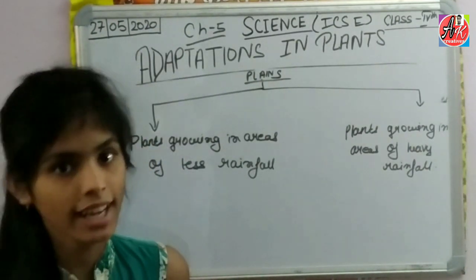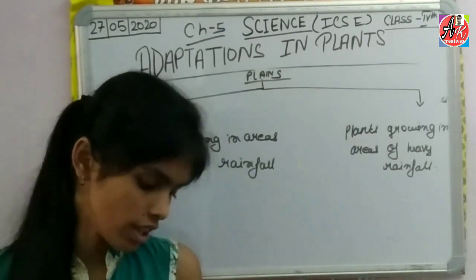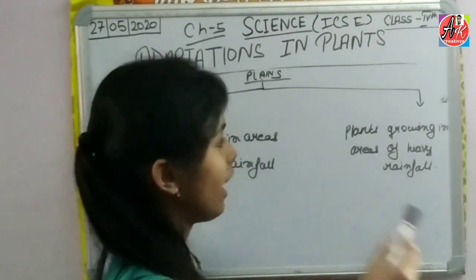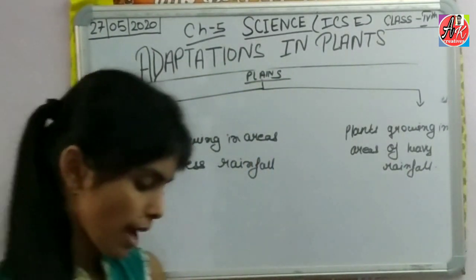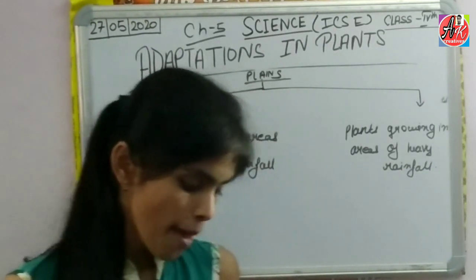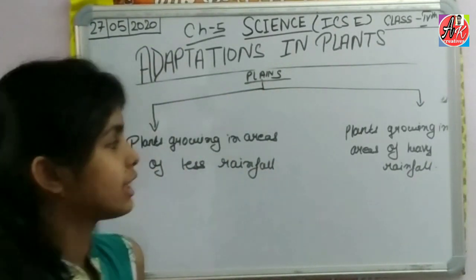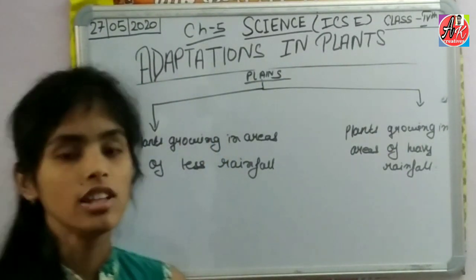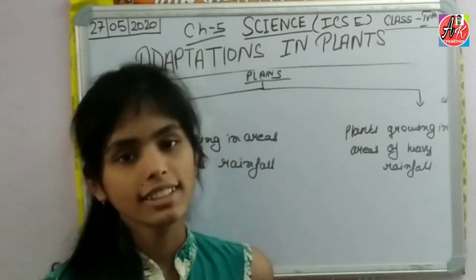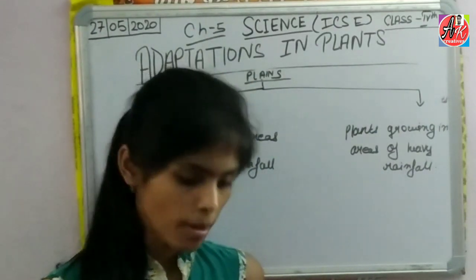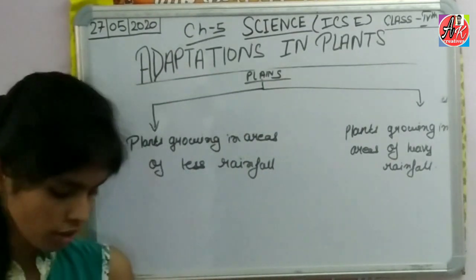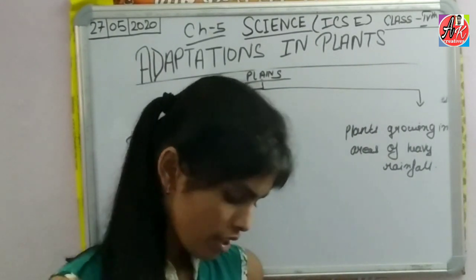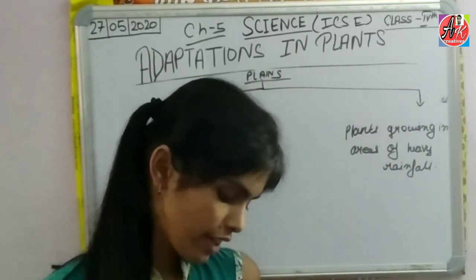The next type is plants growing in areas of heavy rainfall. These trees have many leaves. Their branches are dense and low. These plants have leaves that remain green almost all year round. Therefore they are called evergreen trees.